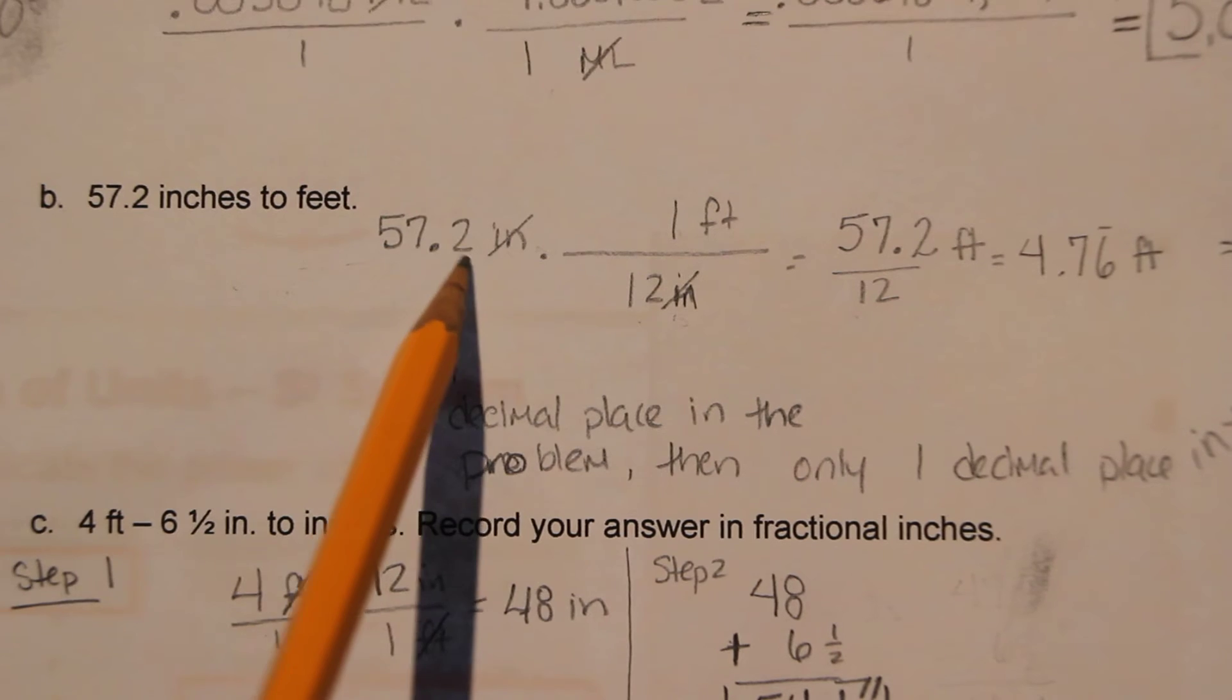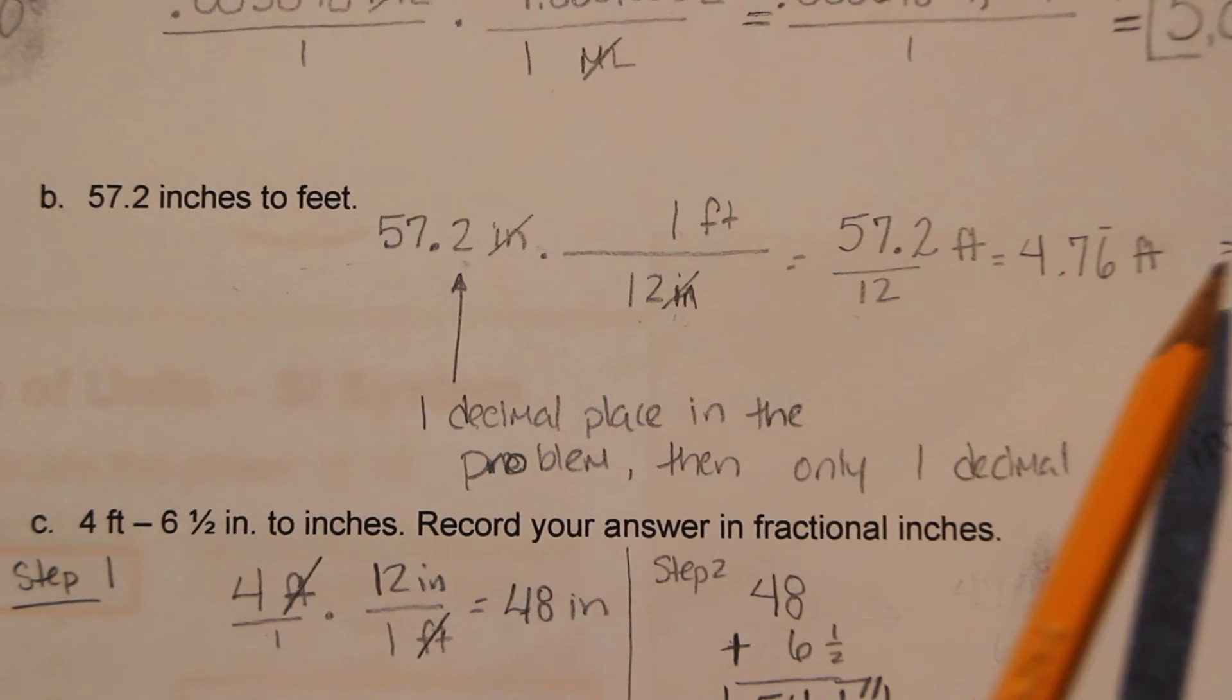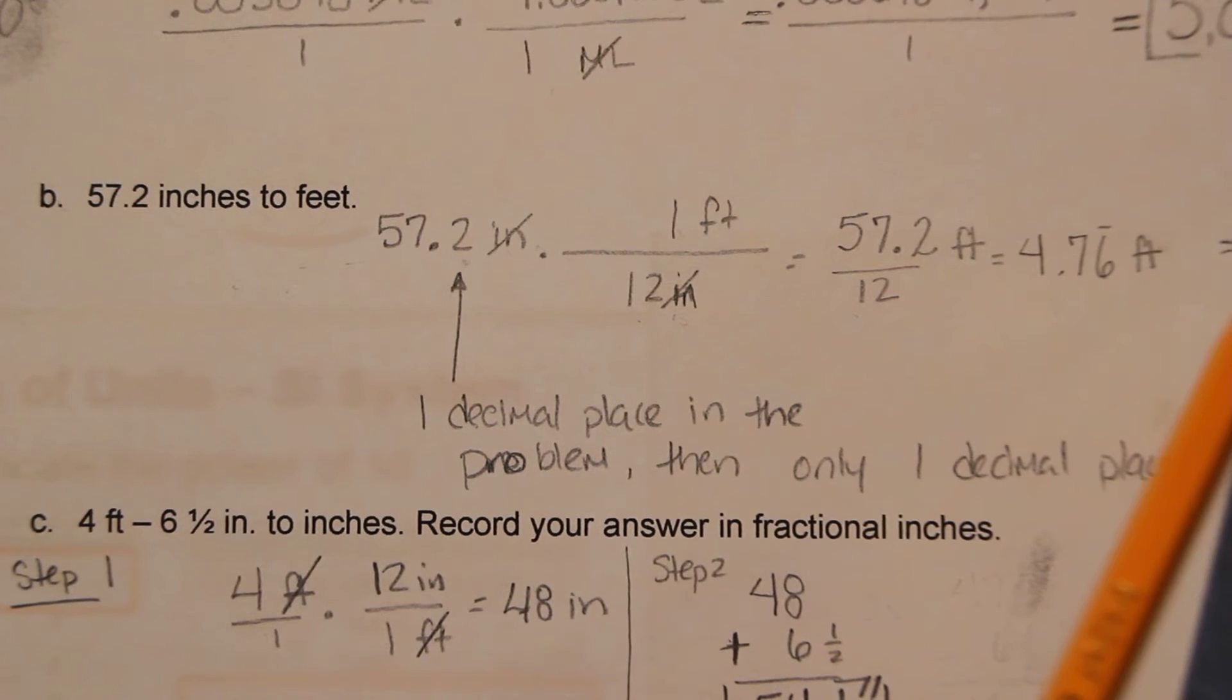Because we only have one decimal place in our original problem, we should only have one decimal place in our answer. So we need to round off to the tenth digit.